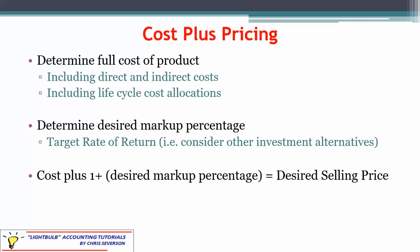Next, determine the desired markup percentage — your target rate of return. Consider your company or departmental hurdle rate, but also consider what you could earn if you invested that money elsewhere: CDs, stocks, bonds, a bank account. You want to at least earn that rate of return with this investment. So you take your cost and add in the desired markup percentage multiplied by the cost, giving you: cost plus markup equals your desired selling price.